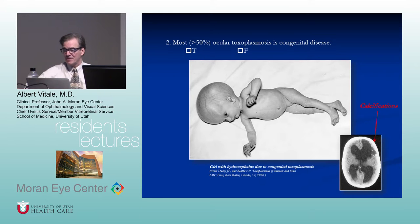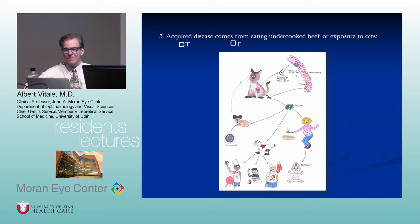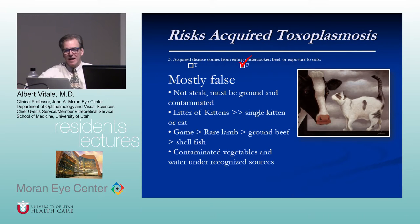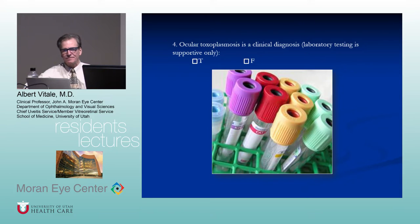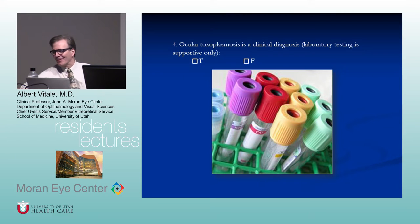Acquired disease comes from eating undercooked beef or exposure to cats — true or false? Mostly false. Usually not beef. The main sources are kitty litter, game, and contaminated vegetables and water — water is probably the most important. Ocular toxoplasmosis is a clinical diagnosis and laboratory testing is supportive only — mostly true. A negative IgG is helpful in ruling it out. PCR in vitreous fluid is specific but not highly sensitive.